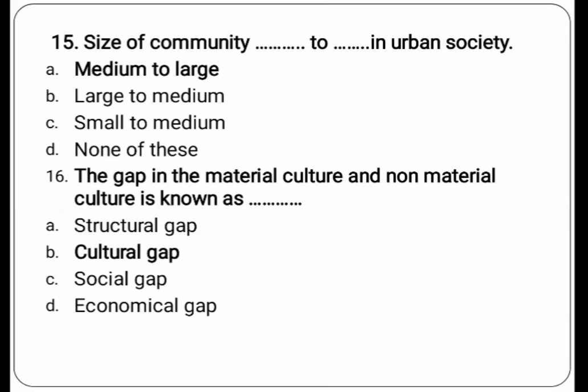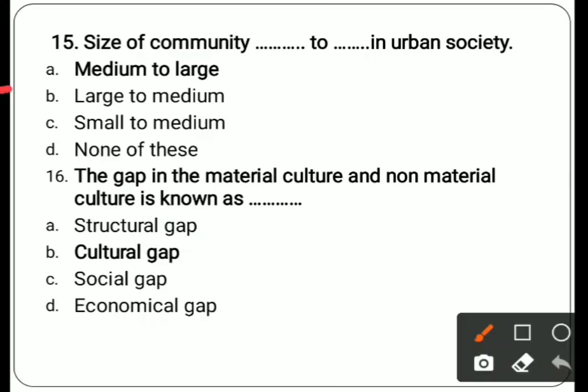Fifteenth question: size of community is dash dash to dash dash in urban society. In rural areas the size of community is small. In urban areas, options are medium to large, large to medium, small to medium, or none of these. Correct answer is medium to large.